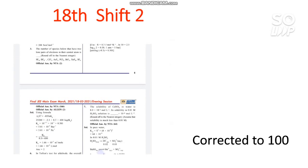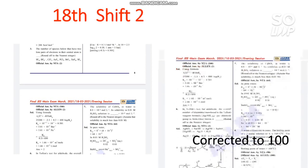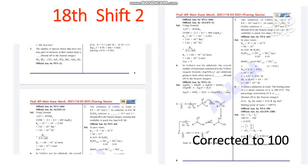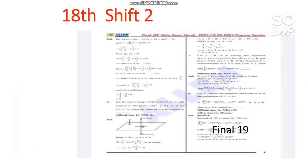For question number 3, NTA says 166 is the answer and in the final answer key 166 remains the right answer. If you put 2 as the right answer you will not get the marks — only students who put 166 will get marks. For question number 8, the answer was corrected to 100. It was initially 50 but is now corrected to 100, so students who put 100 will get the marks.